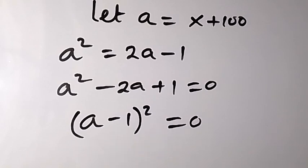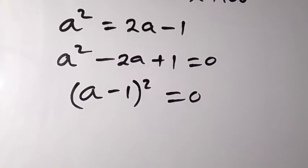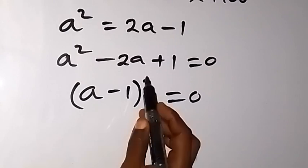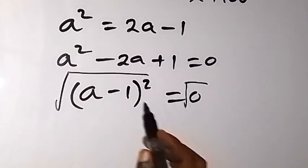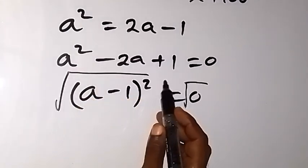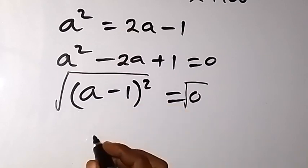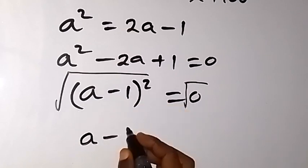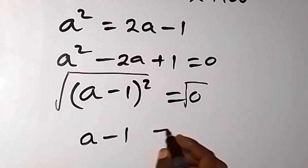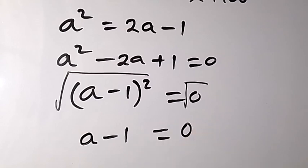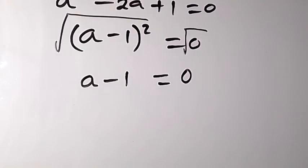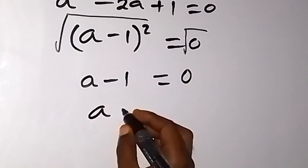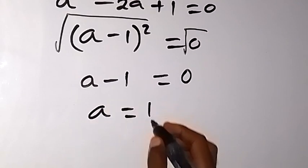We take the square root on both sides. The square root and the square cancel, giving us a minus 1 equals the square root of 0, which is 0. Therefore a equals 1.